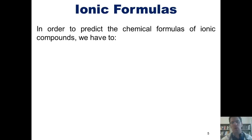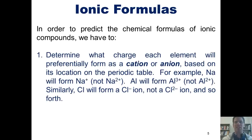In order to predict the chemical formulas of ionic compounds, we have to follow these steps. One, determine what charge each element will preferentially form as a cation or anion based on its location on the periodic table. For example, sodium will form Na⁺, not Na²⁺, because it's located in column 1A of the periodic table. Aluminum by comparison will form Al³⁺, not Al²⁺, because it's in column 3A. Similarly, chlorine will form a Cl⁻ ion, not a Cl²⁻ ion, because it's in group 7A, and so forth.